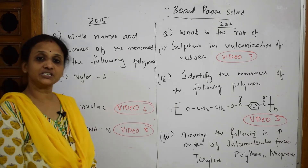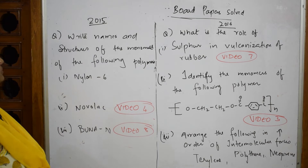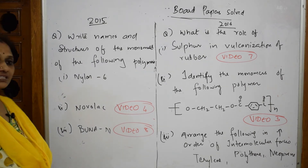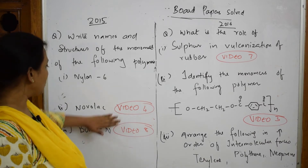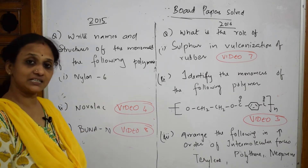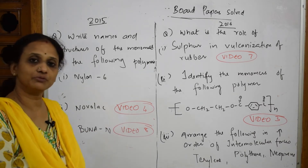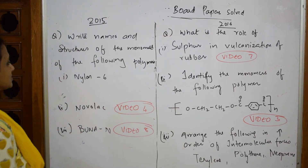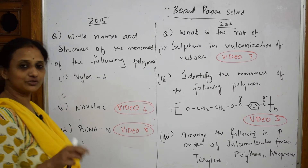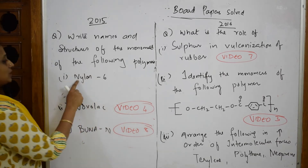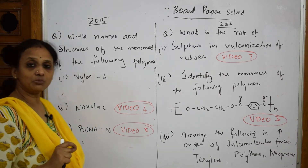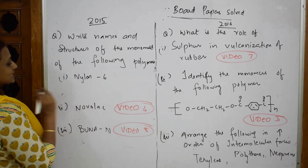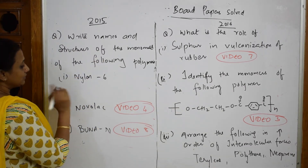Let's come back and do this 2015-2016 paper. In the 2015 paper, they ask for the names and structures of the monomers of nylon 6 and Buna — I did nylon 6 in video number 4 and Buna in video number 8. Let's come back to nylon 6. Remember, nylon 6 is obtained from a monomer called caprolactam — I did this, please watch that video.